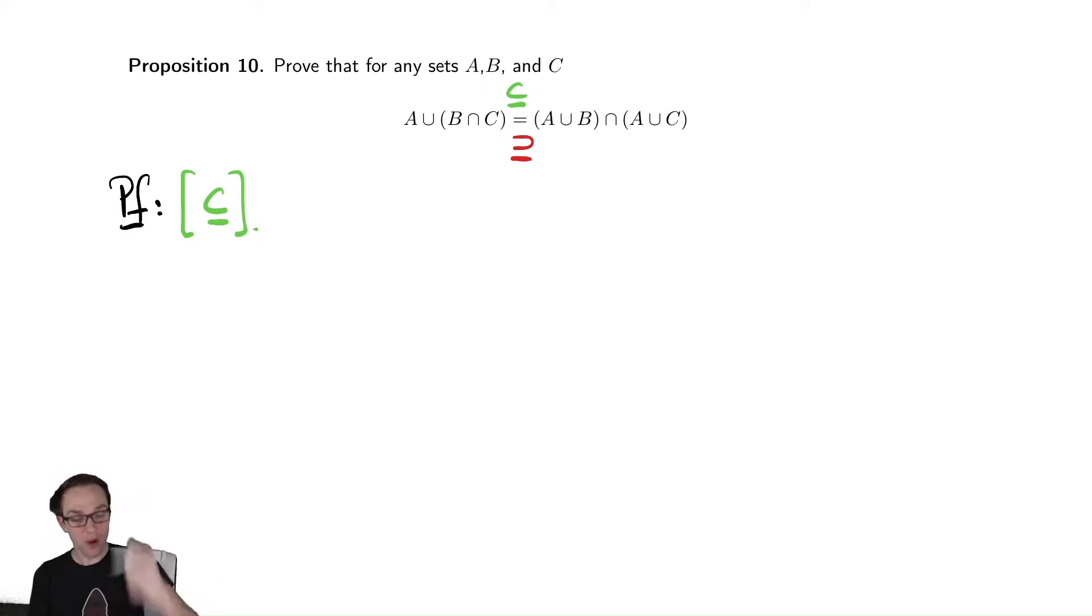and then say what does that tell us until eventually we can then claim that that x is in the right-hand set. Remember that a subset means that if it's in the first set, it must also be in the second set. So, to show that, we're going to begin by supposing we're in that first set. So, let x be in A union B intersect C.